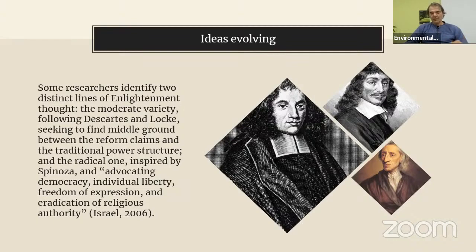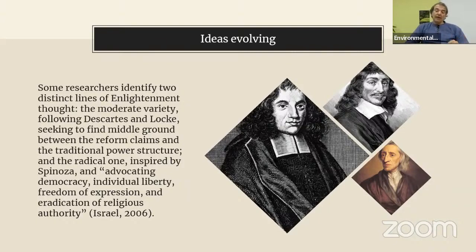According to some researchers, we can identify two distinct lines of Enlightenment: a moderate variety, which seeks to find middle ground between reform claims and traditional power structures, and a more radical one, which advocates democracy, individual liberty, freedom of expression, and eradication of religious authority. In any case, the rich theoretical discussion would bring on the 18th century, which is widely considered as the century of rights.